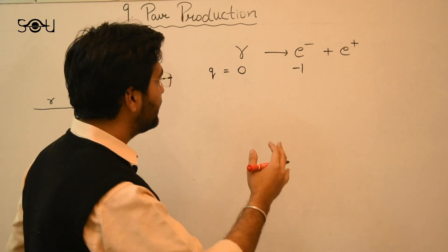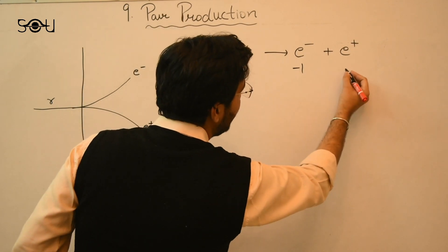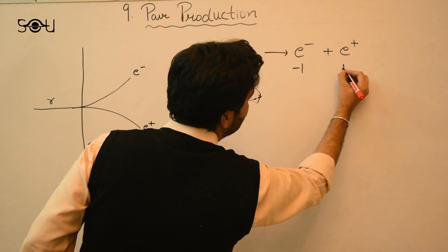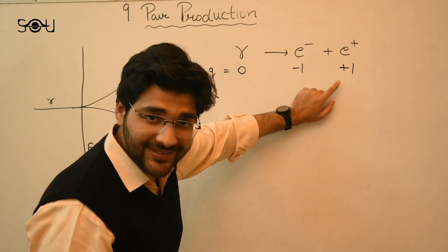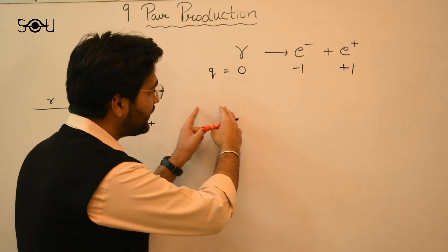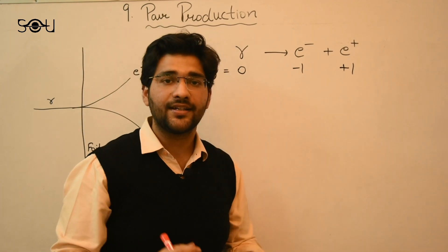That is 1.6 into 10 raised to the power minus 19 joules. And that of a positron is plus one. So minus one plus one is zero. Hence electric charge before and after the interaction is conserved.